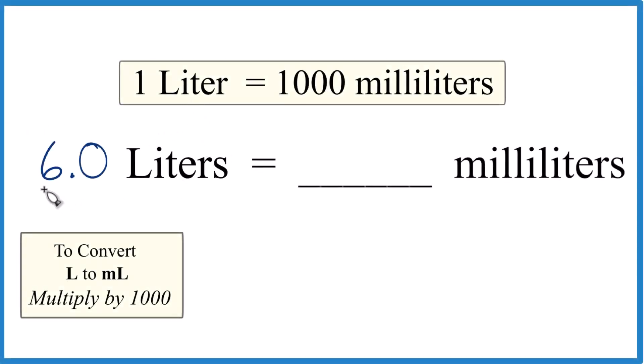Okay, so let's convert 6.0 liters to milliliters. So how do we get 6 liters here to milliliters? We know that 1 liter equals 1,000 milliliters. That's our conversion factor.